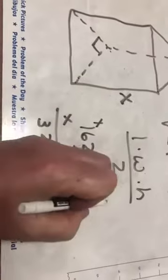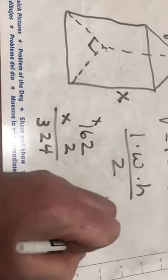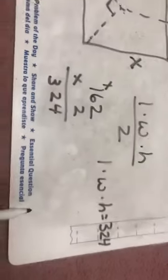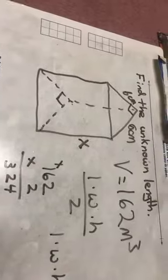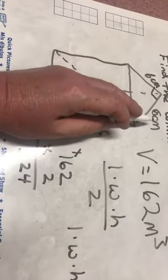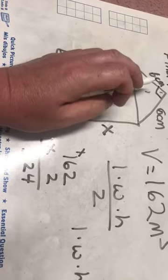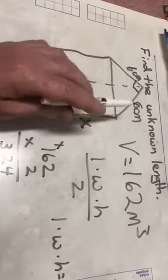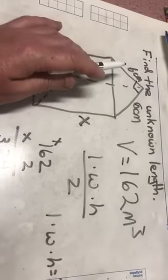Okay, so now I know that length times width times height equals 324. All right, now I know that I have six here, I have six here. All right, and so it's going to be six times six is 36.